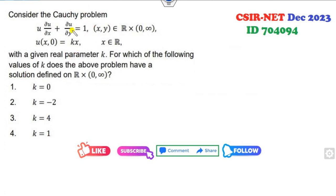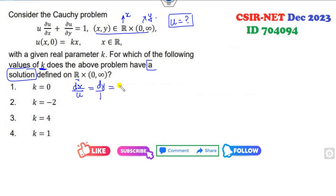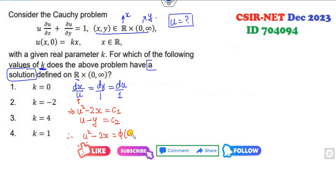Look at this next one — this is the Cauchy problem. The solution is defined here: x is the entire real line and y is only positive values. For which values of K does the above solution have a solution? That means your target is to find the solution of u, and it must be defined on all of ℝ. We start from the Cauchy characteristics: dx/u = dy/1 = du/1. Taking the first and last equations, we get u²/2 − x = C₁. From these two, u − y = C₂.